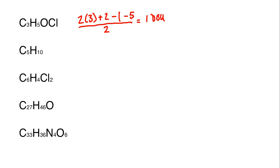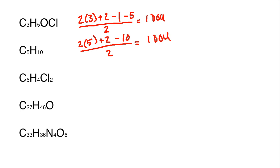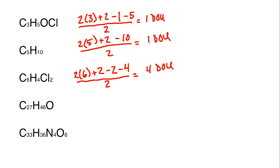I'd encourage you to pause the lecture at this point and see if you can work through the rest of these, then unpause when you're ready. The next one: 2 × 5 + 2 - 10, divided by 2, is again one degree of unsaturation. The following one: 2 × 6 + 2 - 2 (for the halide) - 4, divided by 2, gives four degrees of unsaturation.